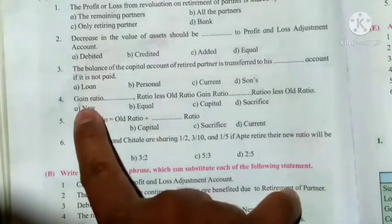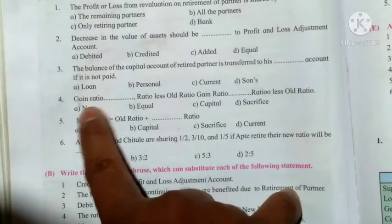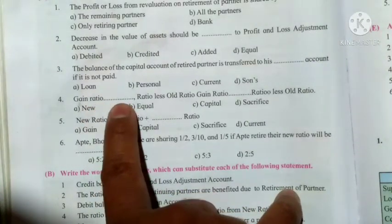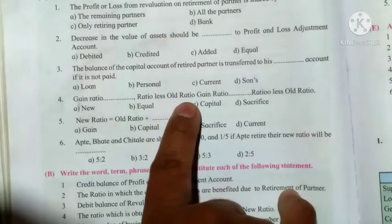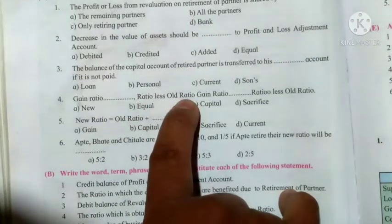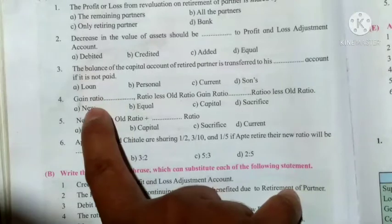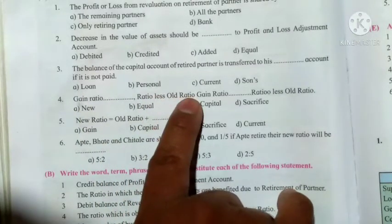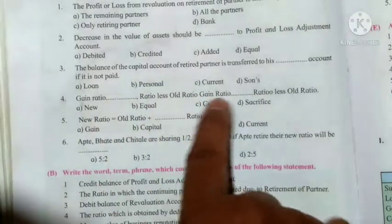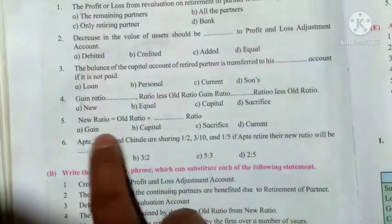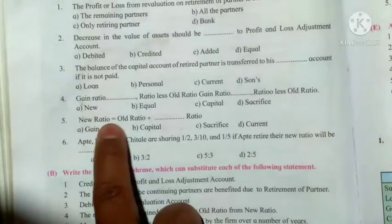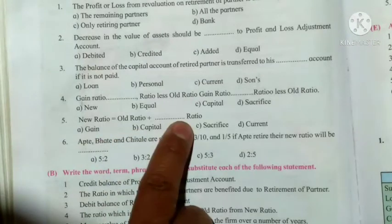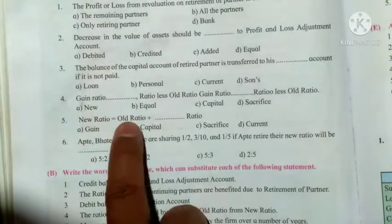The next question is gain ratio. The gain ratio is equal to new ratio less old ratio. The answer is: gain ratio is equal to new ratio less old ratio. Also, new ratio is equal to old ratio plus gain ratio.